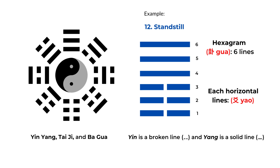Yijing is also developed from the Ba Gua because each hexagram has six lines — there's the upper Gua and the lower Gua. This is number 12, Standstill. The top Gua has three solid lines and the bottom Gua has three broken lines, so it's a combination of two Ba Gua images. The top one is heaven and the bottom one is earth. The solid line means yang and the broken line means yin, so different yin and yang combinations create different situations.